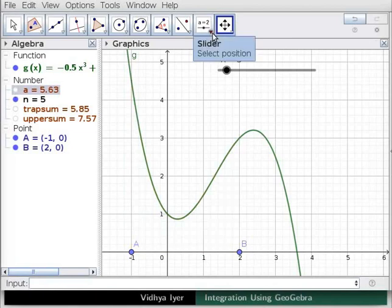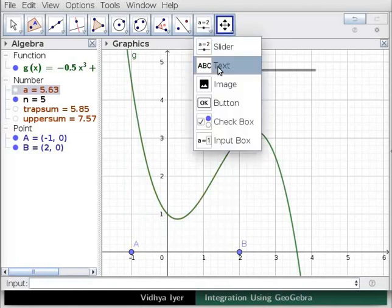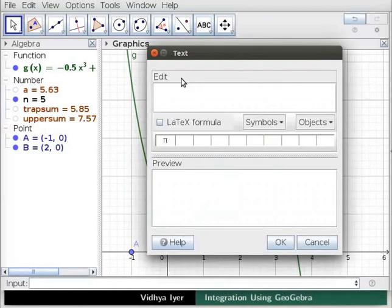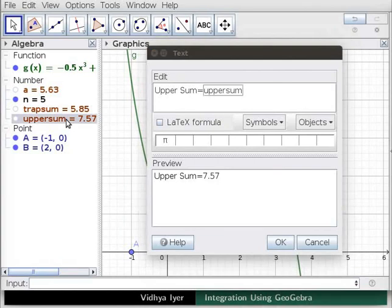Under slider, click on text. Click in graphics view to open a text box. In the edit field, type upper sum equals and in algebra view, click on upper sum. Click again in the text box and press enter.